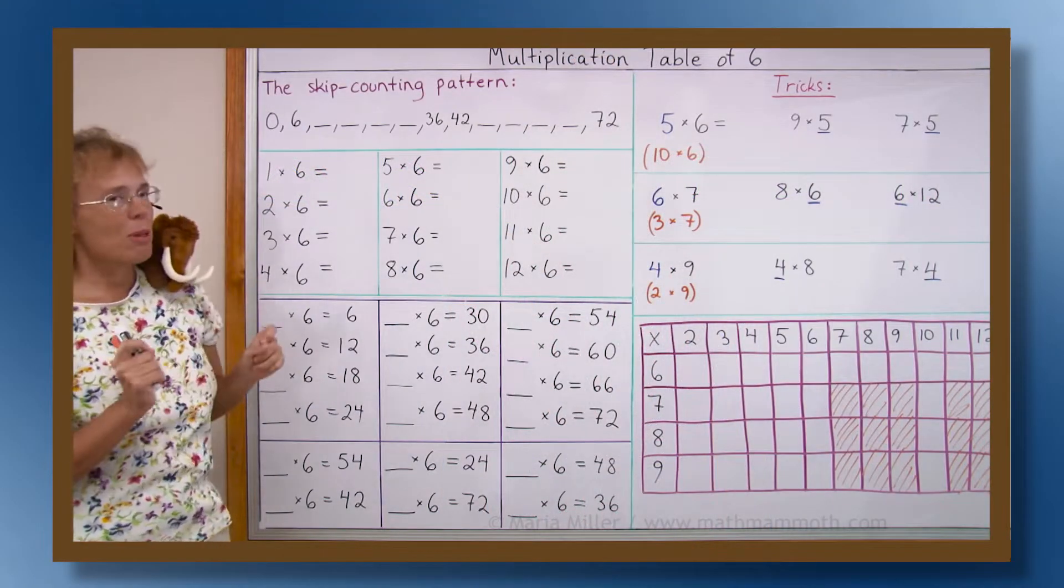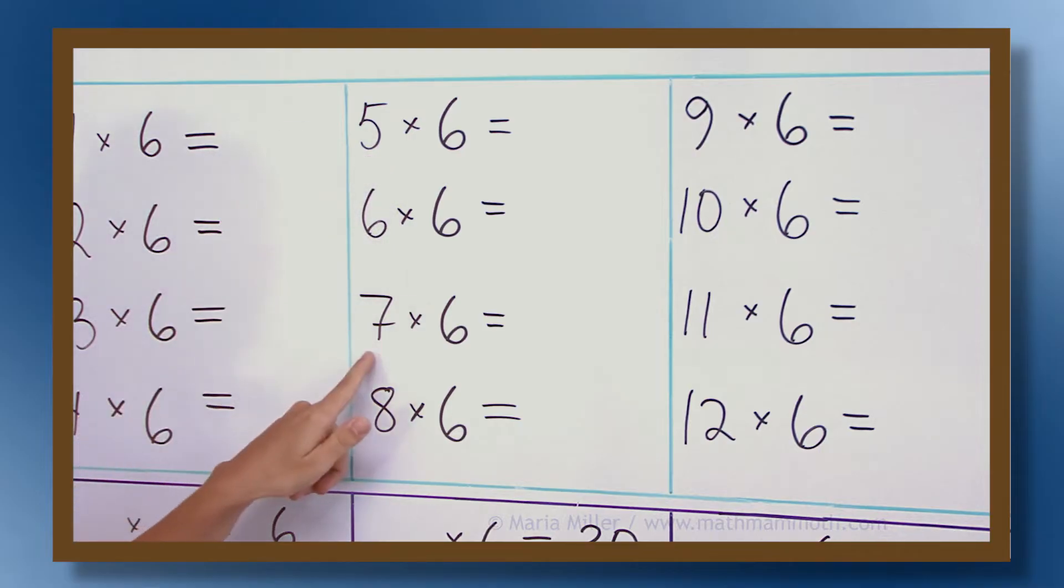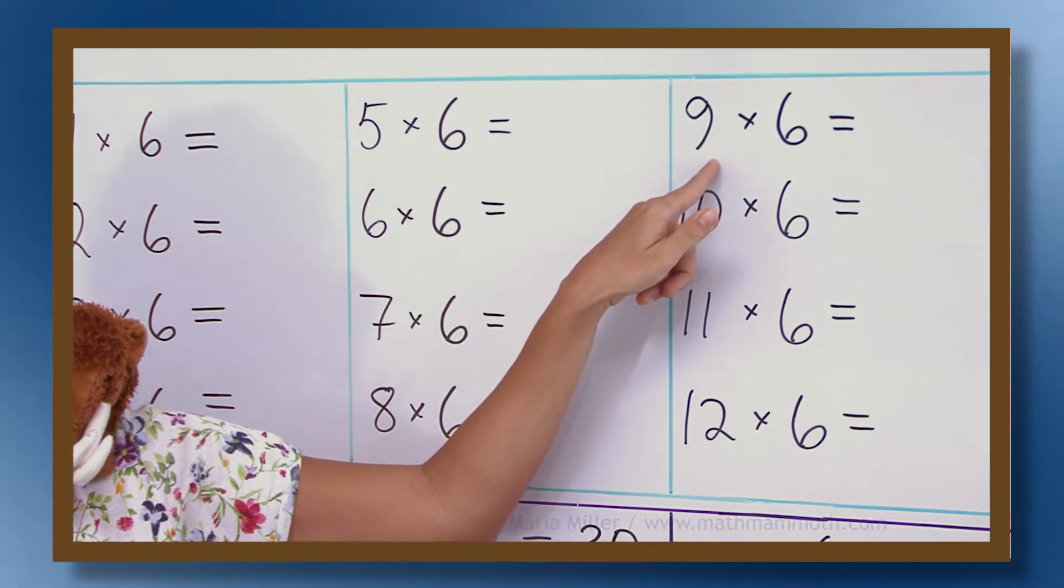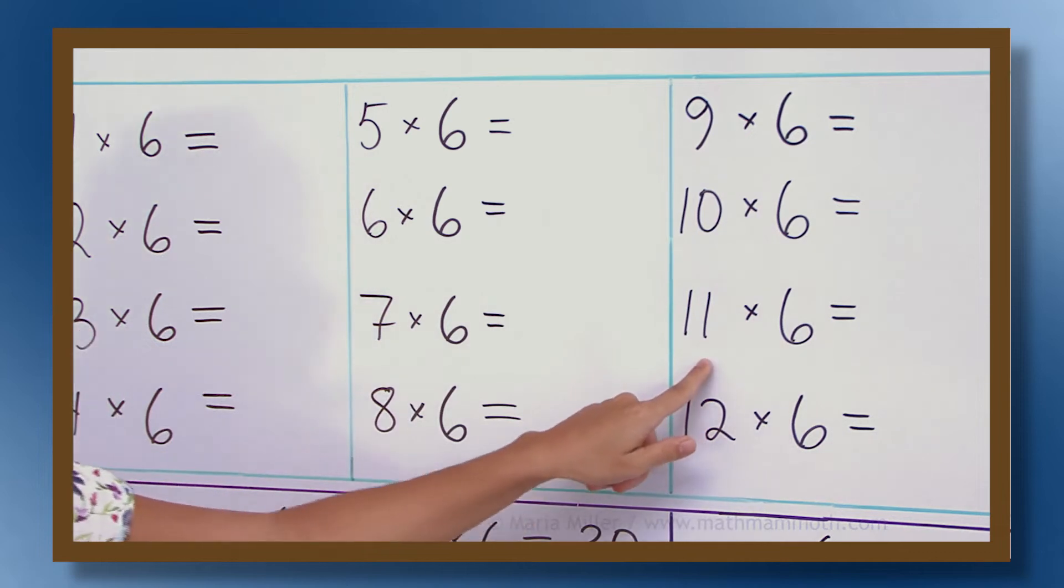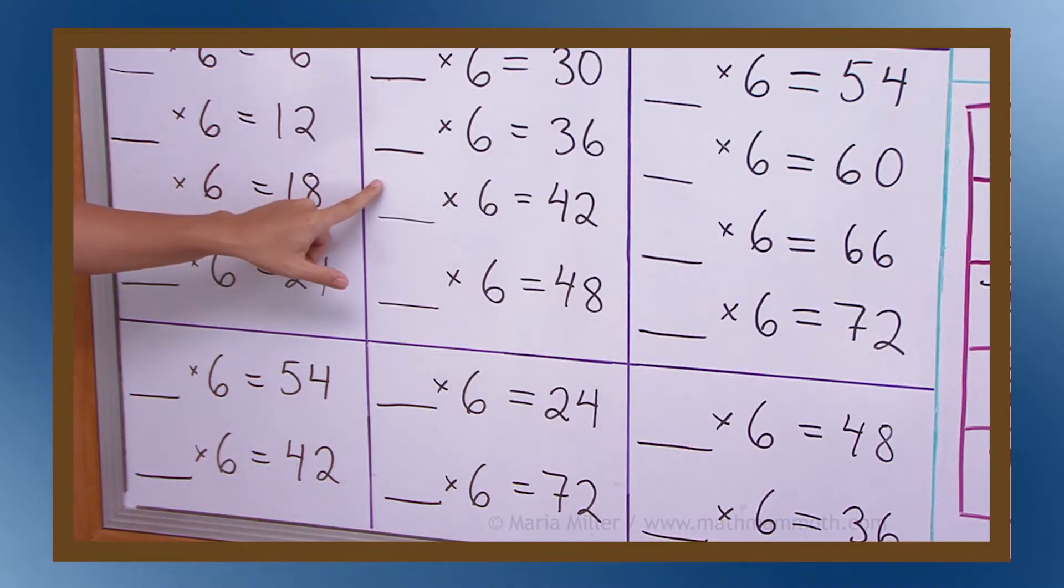This consists of first memorizing the skip counting pattern, which are the answers, and then associating those answers to the actual multiplications. At first the drilling is done within the structure of the table and not randomly, and from there we upgrade to random drilling.